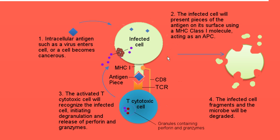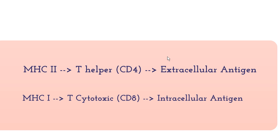In summary, T helper cells are used in extracellular antigenic responses and require antigen to be presented with MHC class 2 molecules. T cytotoxic cells are used in intracellular invasions and are activated by APCs presenting the antigen using the MHC class 1 molecule.